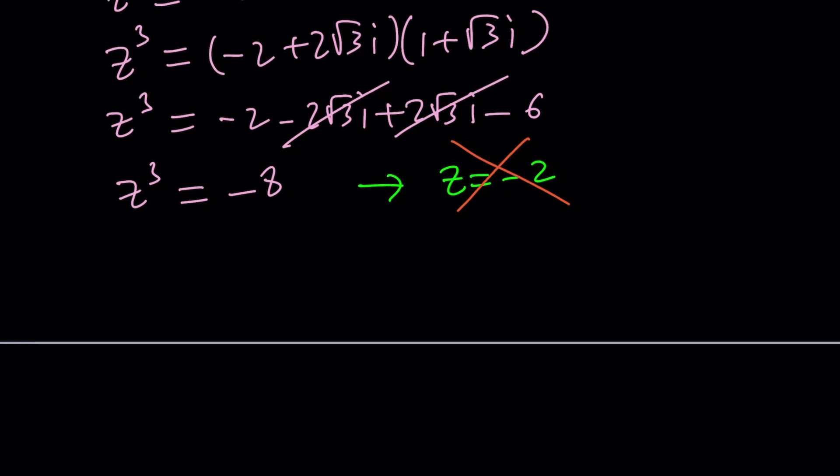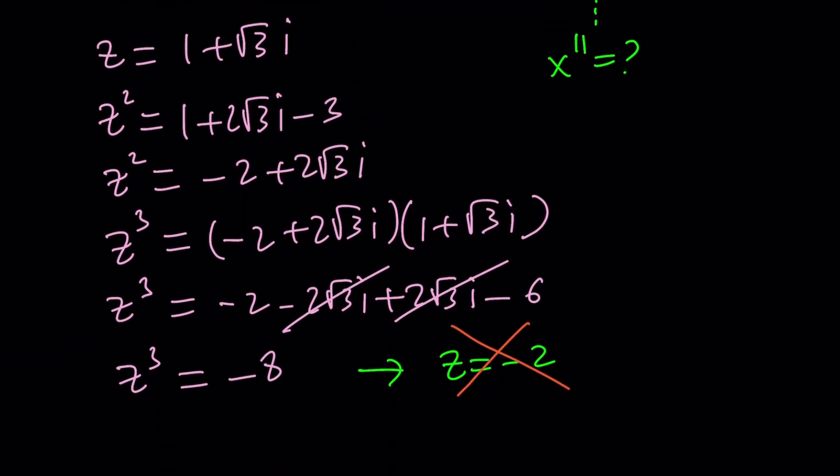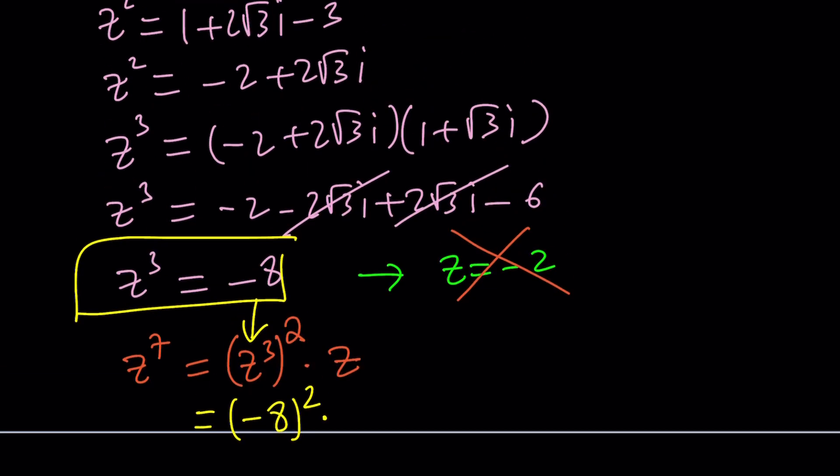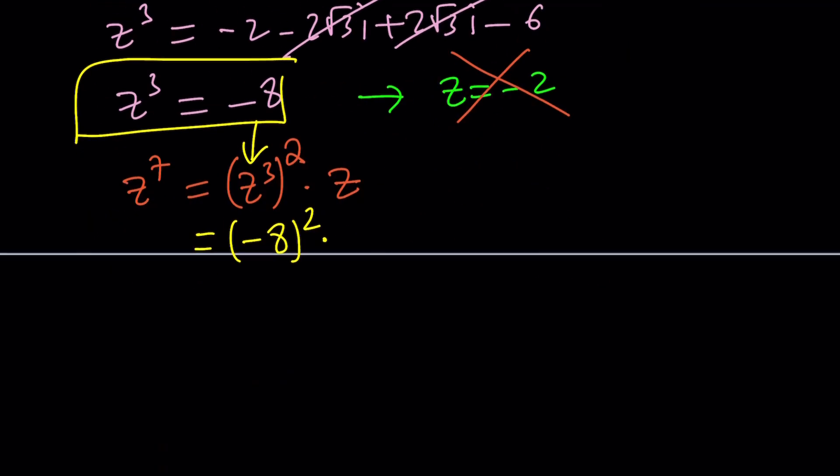Cube root of negative eight. Interesting. Well, since we want to get to the seventh power, it only makes sense if we go ahead and square this to get sixth power and multiply by Z and we should be good to go. But the Z cubed is a real number. We don't care what Z is in this case. So we can just go ahead and plug it in. That's going to give us negative eight squared times Z. But we actually know what Z is. Now we do care one plus root three I and the product is going to be the answer.